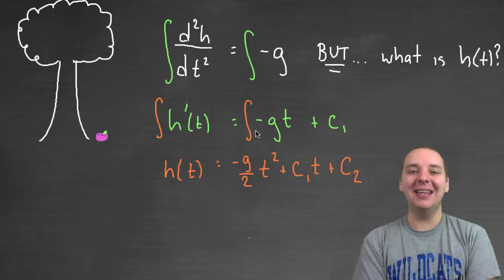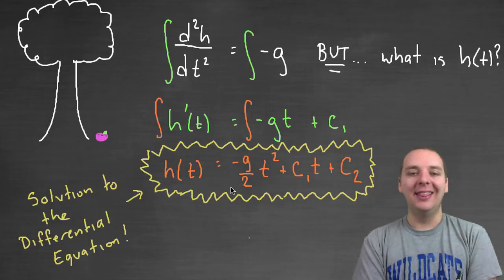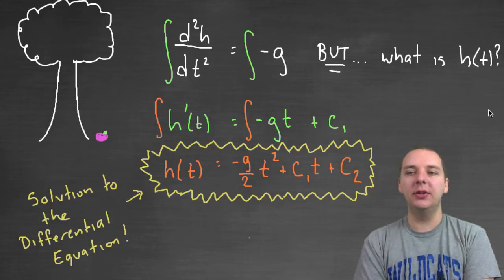And then we're going to integrate a second time to get the original h(t) back. So we get negative g over 2 t squared, plus C₁t, plus C₂. Because g and C₁ are constants, and so they're just tag along constants when we integrate. So anyways, what we just found here, this guy is the solution to this original differential equation.